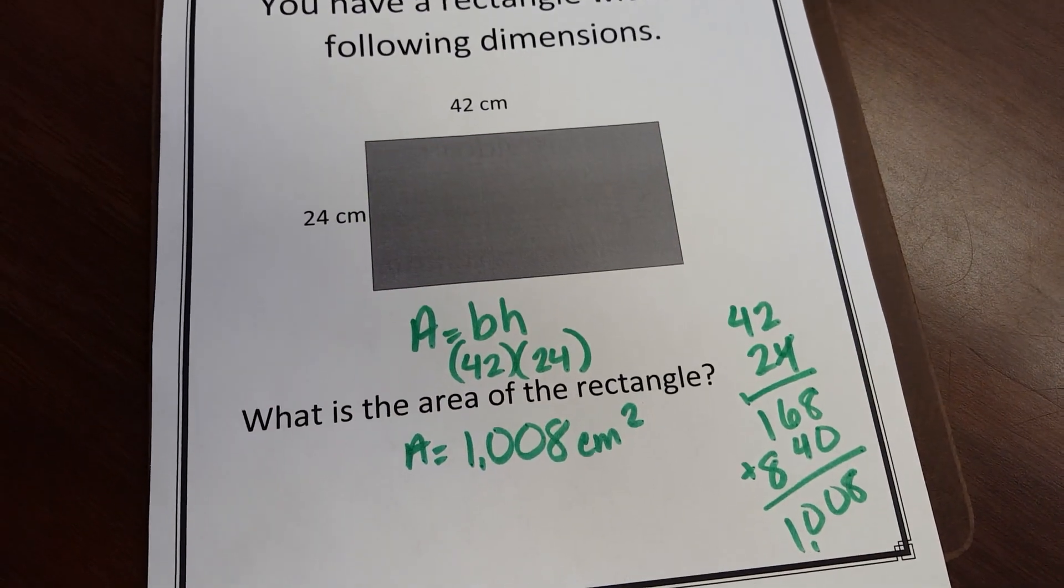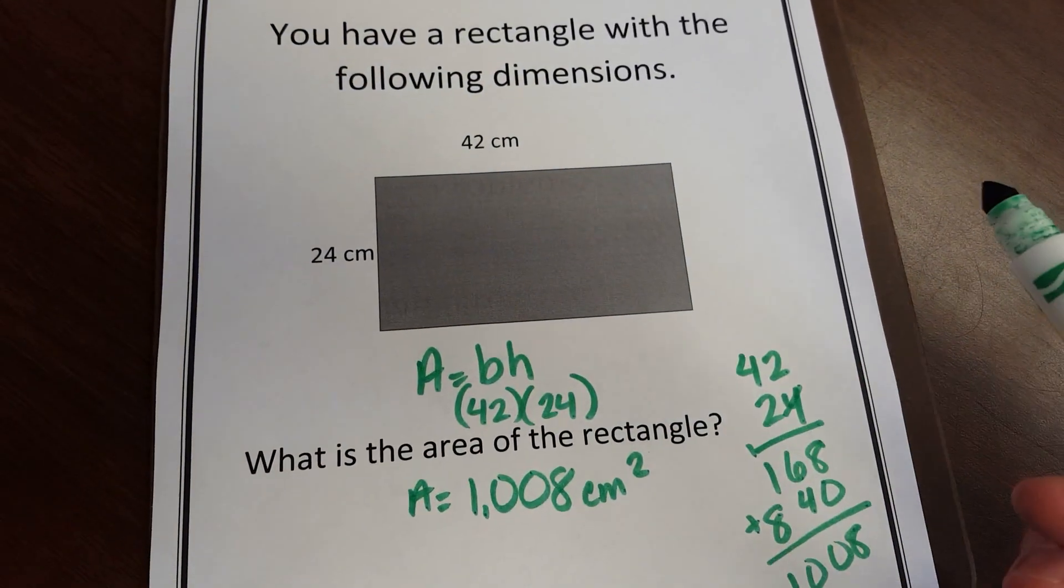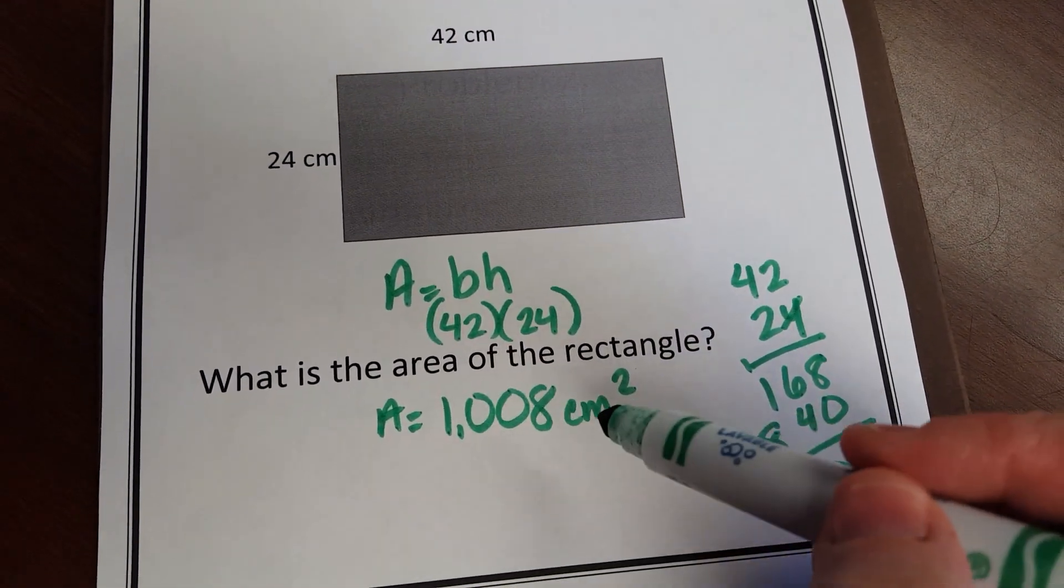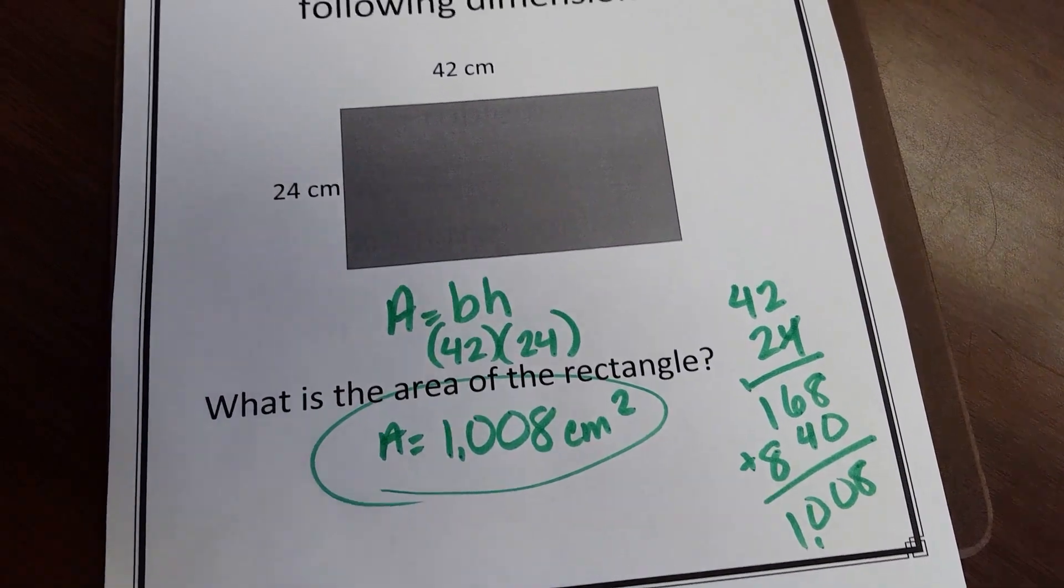All right, so if these were truly 42 and 24 centimeters and I laid it on grid paper, the centimeter grid paper, it would cover up 1,008 square units.